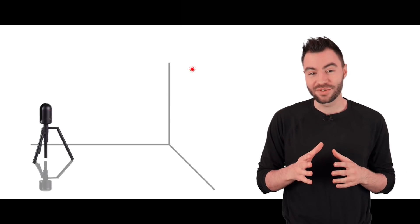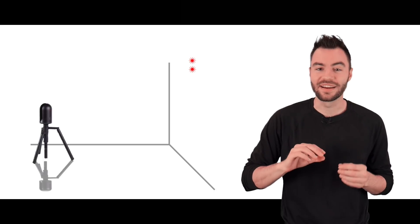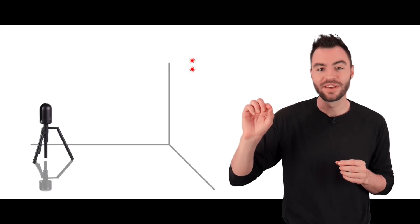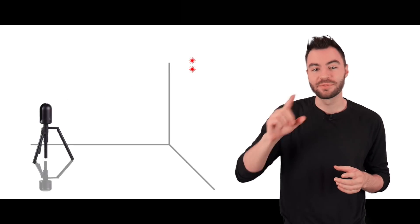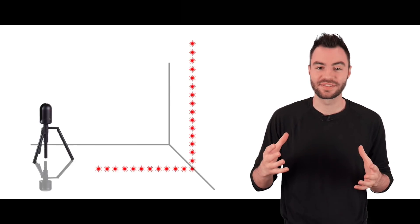Then the mirror rotates ever so slightly and does this whole process again, this time measuring a point just above the previous point. The mirror spins all the way around measuring anything in its line of sight.